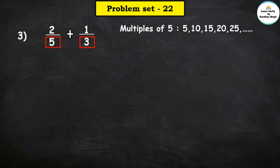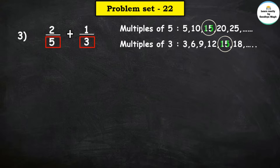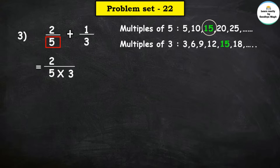We need to find the lowest common multiple of 5 and 3. The LCM is 15. First fraction: 2 upon 5 — denominator 5 is multiplied by 3 to get 15, so numerator 2 is also multiplied by 3. Second fraction: 1 upon 3 — denominator 3 is multiplied by 5 to get 15.